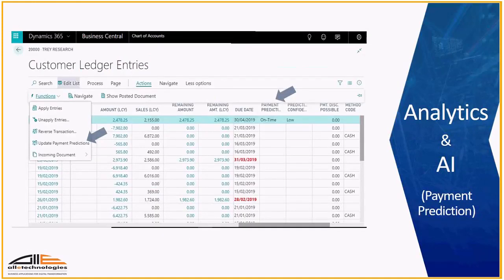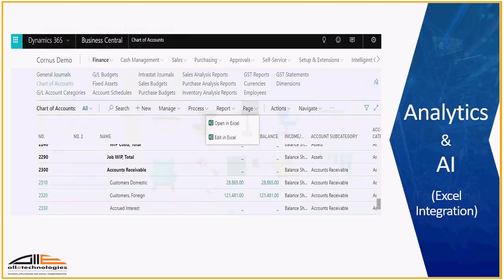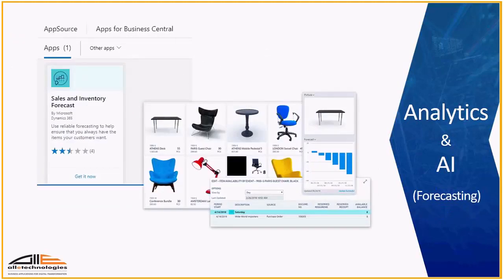The next one shows how Business Central helps in payment prediction for customer invoices — notice the highlighted area. With the Edit in Excel and Open in Excel options, users can readily update data in Excel and push it back to Business Central. You can also optimize stock levels and avoid lost sales using the built-in intelligence of item availability and sales and inventory forecast apps available as extensions from Microsoft.